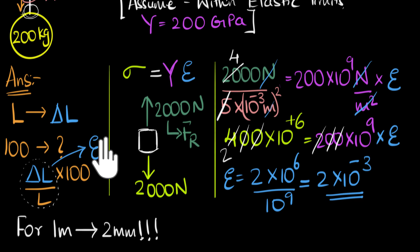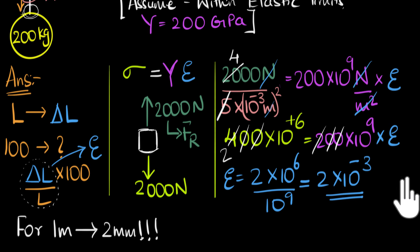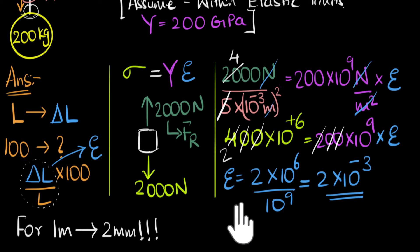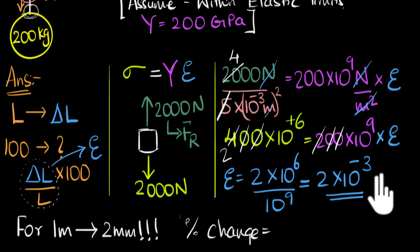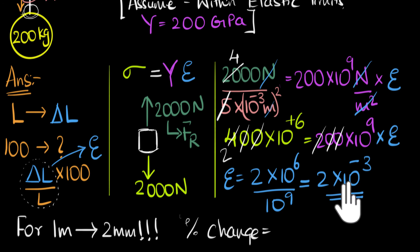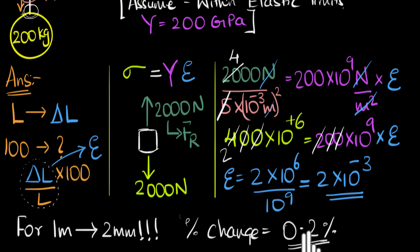Our final step is to calculate the percentage change. To do that, we just take the strain and multiply by 100. We know that for unit length the change is 2 times 10⁻³, so for 100 we just multiply by 100. The percentage change is 2 times 10⁻³ times 100, which gives 10 to the power minus one, or 0.2. So our final answer: the percentage change in the length of the steel wire is just 0.2%. Steel is awesome.